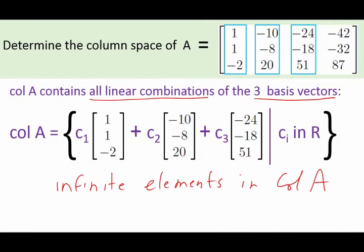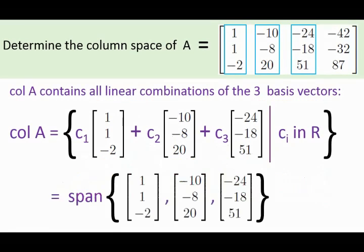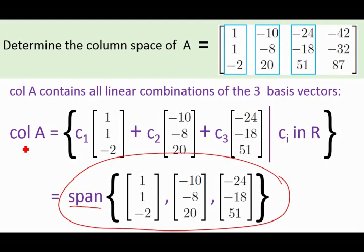We have all linear combinations, so I can have one times this vector, plus pi times this vector, minus three times that vector — that would be in col A. I can choose any real numbers for my c sub i's, so we have an infinite number of elements in our column space. Since our column space is the set of all linear combinations, that by definition is the span, and so our column space is the span of our first three columns.